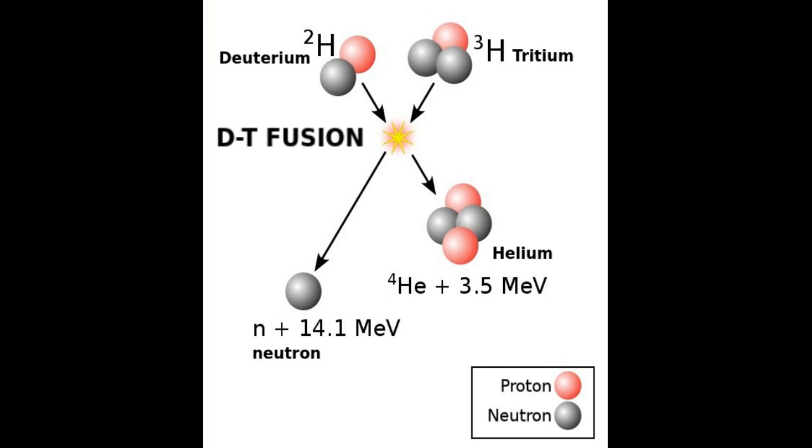Hence the hope for future DT fusion power plants is pinned on two measures. Firstly, the efficient recapture and recycling of the 99% of tritium that does not undergo fusion in any given burn. This is a serious challenge in itself, because tritium is notorious for permeating and leaking out of metal walled containment.